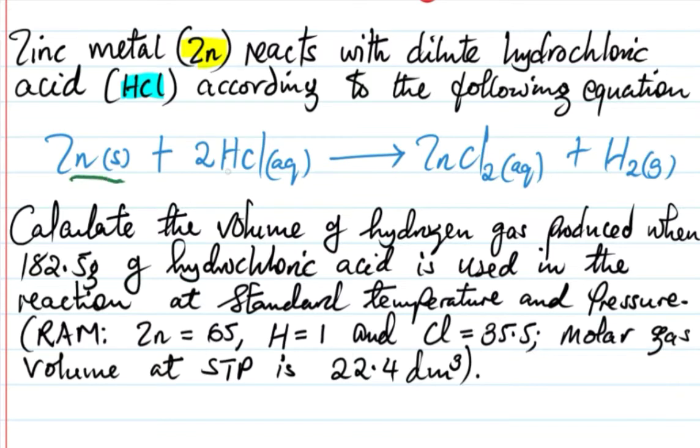We have zinc reacting with hydrochloric acid to give us zinc chloride and hydrogen gas. The question is: calculate the volume of hydrogen gas produced when 182.5 grams of hydrochloric acid is used in the reaction at standard temperature and pressure.